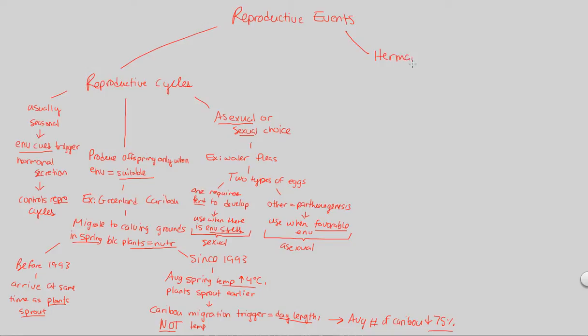So let's write this down. Hermaphroditism. I want to make sure I spell this right. And we're going to initially just say right at the onset that this is a sexual form of reproduction, but it's a specific event that occurs in some organisms.